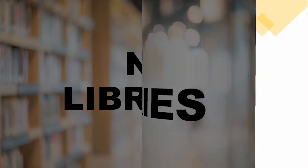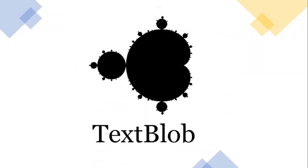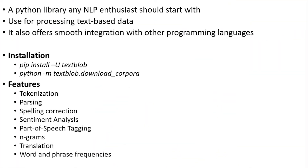Number one is TextBlob. It's a Python library which any NLP enthusiast should start with. It is used for processing textual based data. It also offers smooth integration with other programming languages, and it also provides simple APIs and features like tokenization, parsing, spelling correction, part of speech tagging, translation, and word and phrase frequencies.